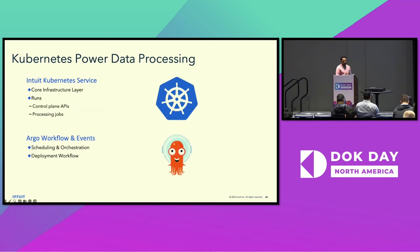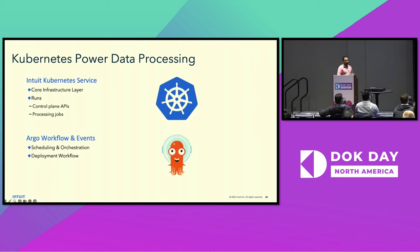As you may have noticed from the batch and stream processing platform, Kubernetes powers the data processing at Intuit. Intuit has an MSaaS or Intuit Kubernetes service layer which manages a fleet of Kubernetes clusters and namespaces where our core infrastructure runs. Even the control plane APIs are deployed on Kubernetes. We use Argo Workflow and Events to perform scheduling, orchestration, and deployment workflows.